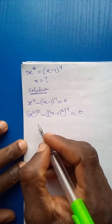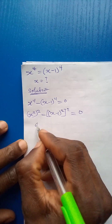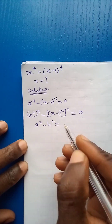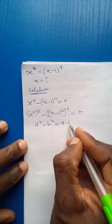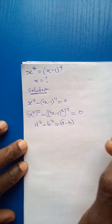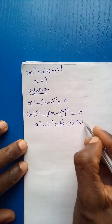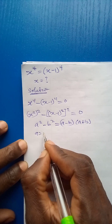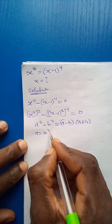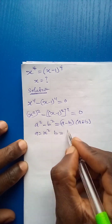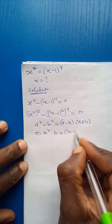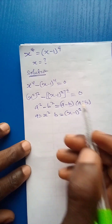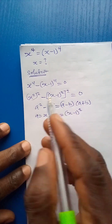Talking about difference of two squares: if I have a squared minus b squared, I expand it into a minus b in one bracket and a plus b in another bracket. So here a is equal to x squared and b is equal to x minus 1 squared. Applying this rule: